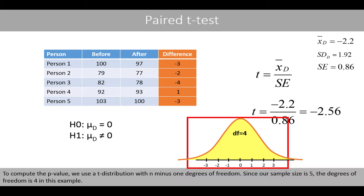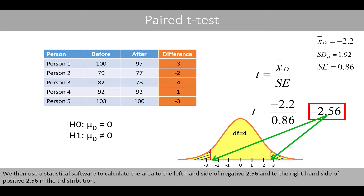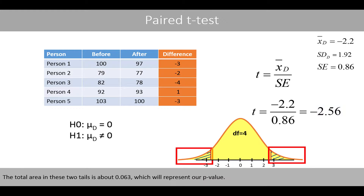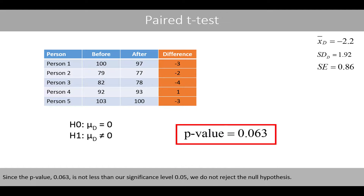To compute the p-value, we use the t-distribution with n minus 1 degrees of freedom. Since our sample size is 5, the degrees of freedom is 4 in this example. We then use statistical software to calculate the area to the left-hand side of negative 2.56 and to the right-hand side of positive 2.56 in the t-distribution. The total area in these two tails is about 0.063, which represents our p-value. Since the p-value of 0.063 is not less than our significance level of 0.05, we do not reject the null hypothesis.